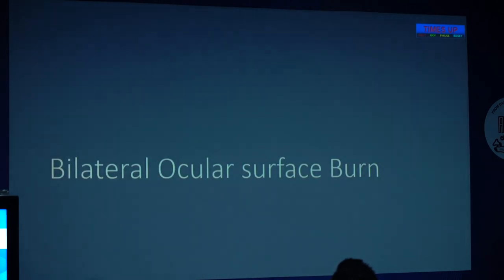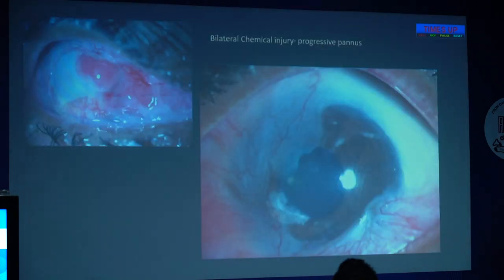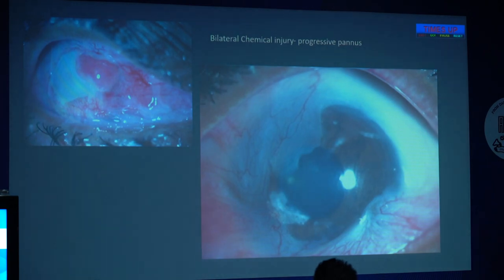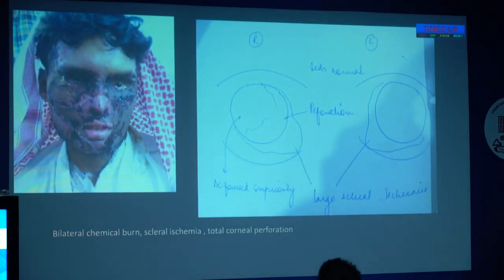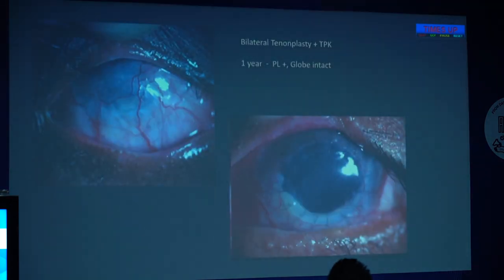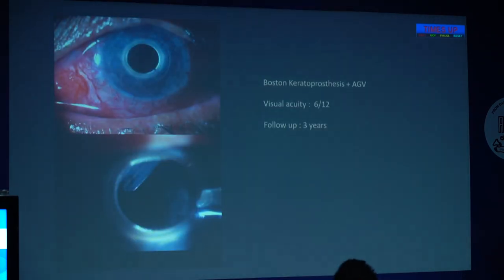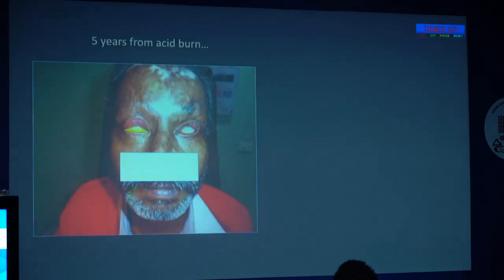Patients with bilateral ocular burn are a totally different ballgame because they don't have the other eye for the limbus. If not manageable with a BOSP lens, this is where we do an allostem cell transplant. Immunosuppression is what you have to follow up with long-term in these patients, but they do well. In one case with bilateral chemical burn with scleral ischemia and total corneal perforation, we performed palatal tenonplasty with therapeutic PK in emergency and were able to salvage one eye after one year. The patient underwent Boston keratoprosthesis. We have learned over time to do more allostem transplant than Boston K-PRO in these eyes.